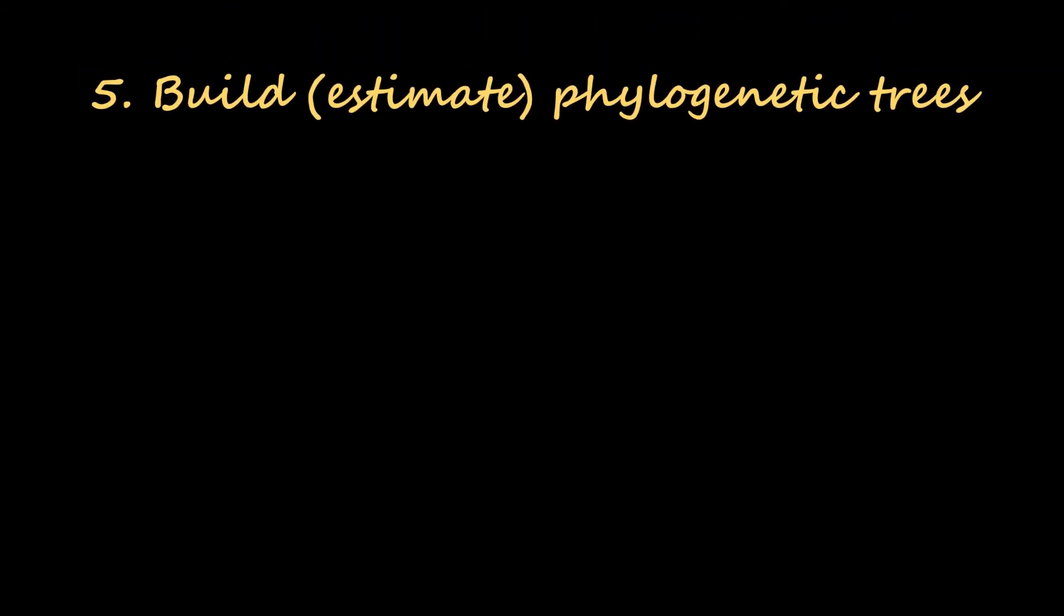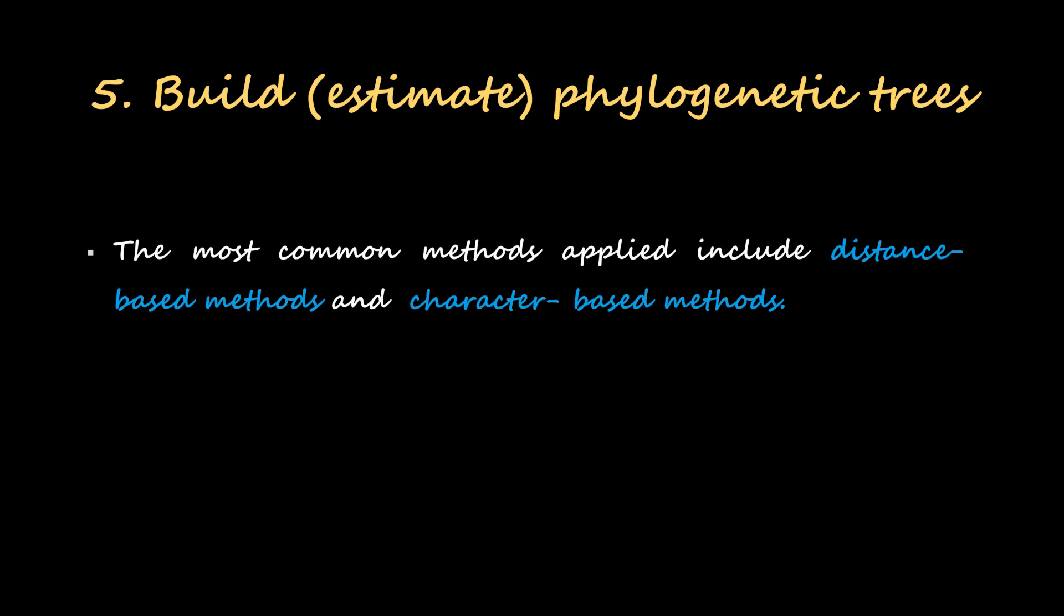Next is building or estimating the phylogenetic trees. The most common methods applied include distance-based methods and character-based methods. There are two types of methods we can use to construct a phylogenetic tree. The software and packages used for this are PAUP, PAML, PHYLIP, etc.